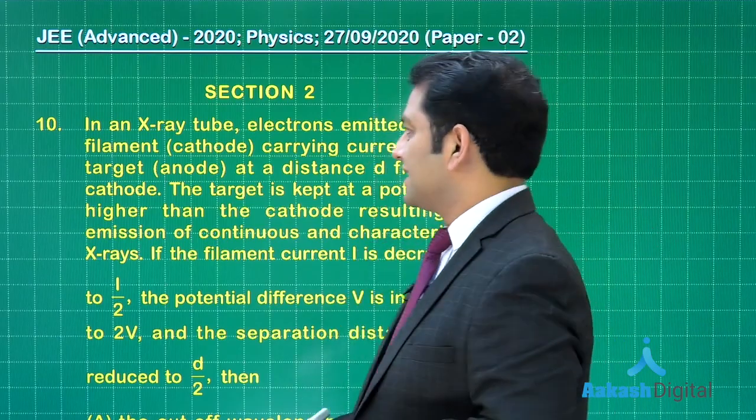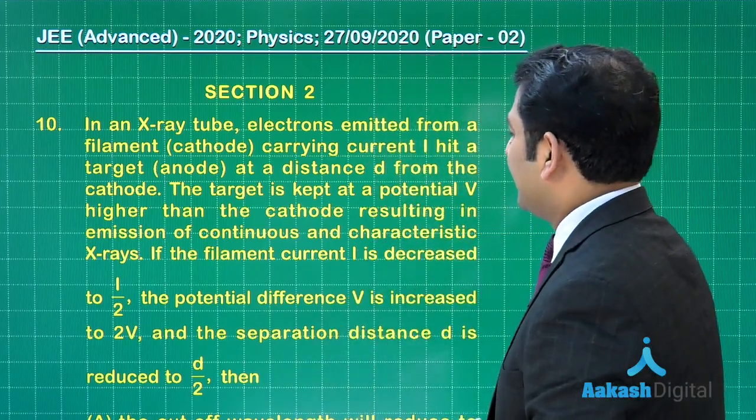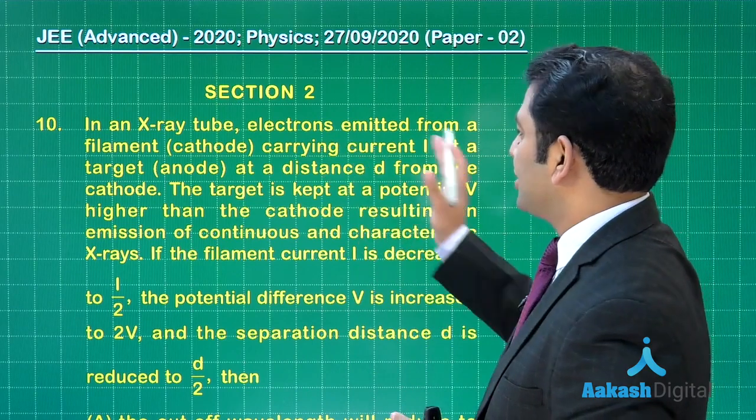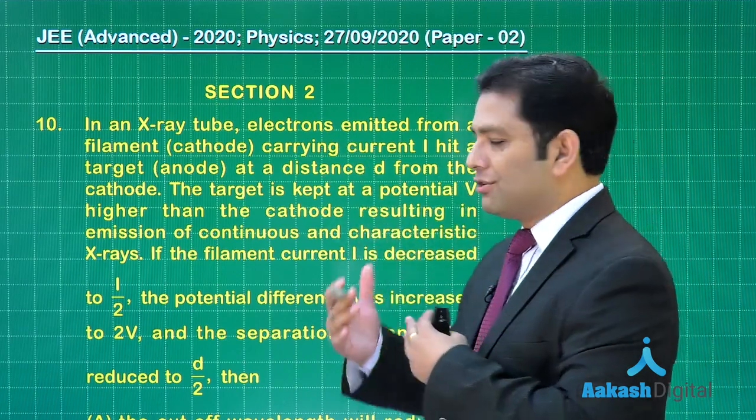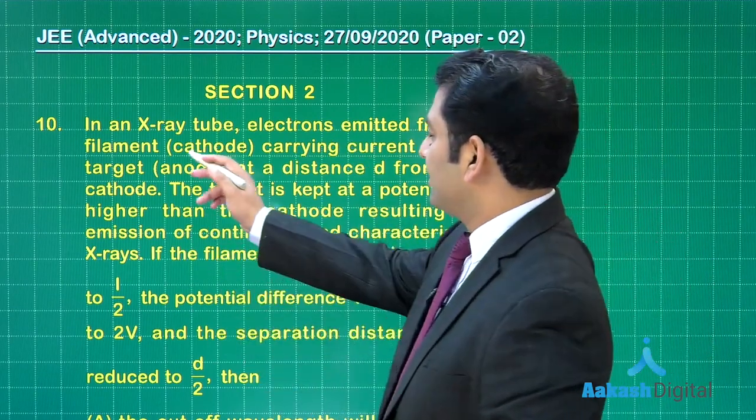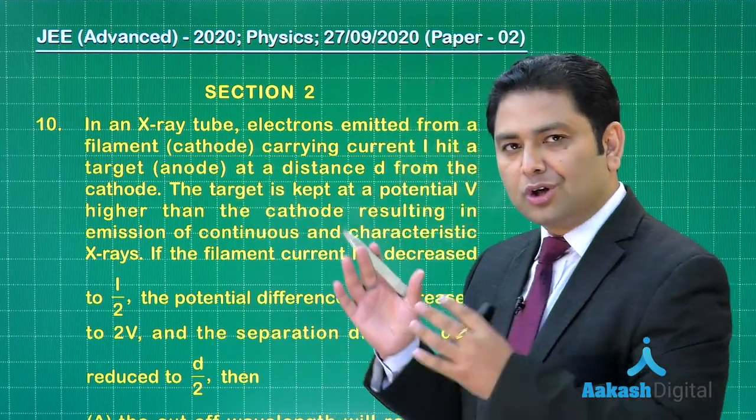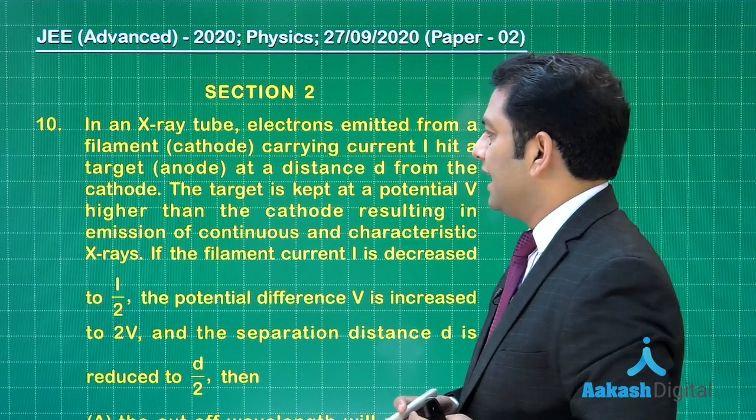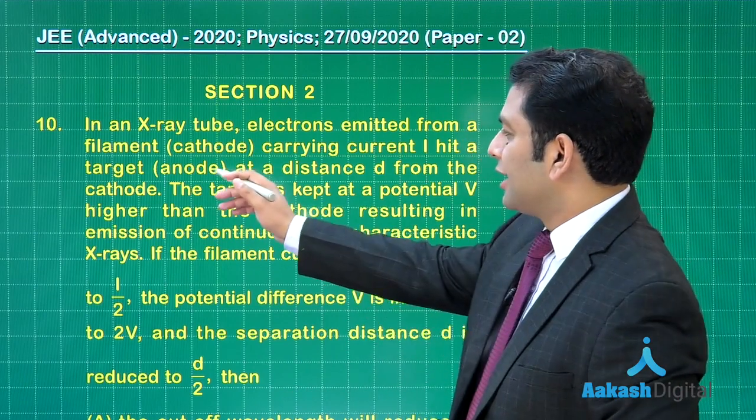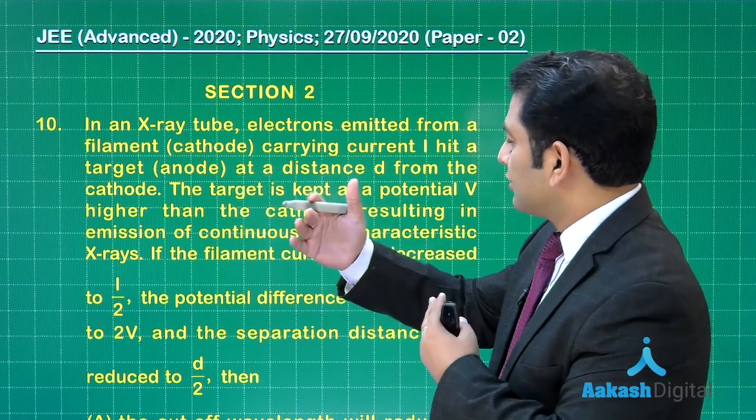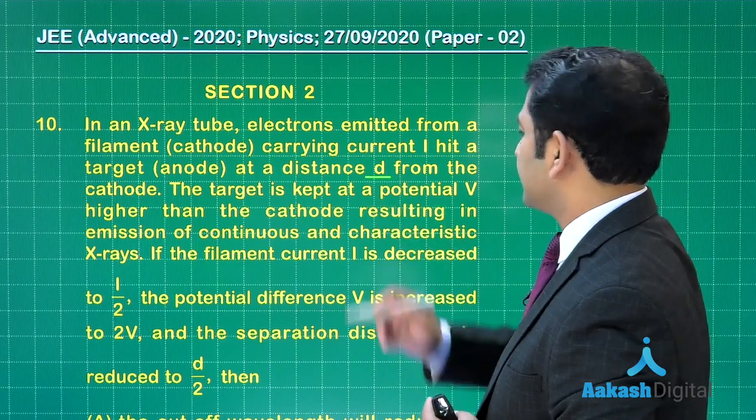Question number 10, modern physics, x-ray. There is an x-ray tube where electrons are emitted from the filament which acts as a cathode, and that electron goes and hits the anode, also called the target. The distance between cathode and anode is d, and the accelerating potential is v.